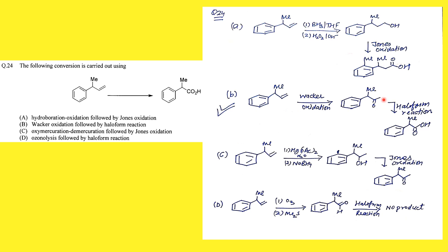The haloform reaction requires the presence of a CH3CO group — specifically an acetyl or acetoxy group. When treated with iodine in the presence of a base, it leads to formation of the corresponding acid. This is the correct sequence. Oxymercuration-demercuration: mercury adds water, water attacks inside leading to formation of a secondary hydroxy compound — which is opposite to what hydroboration oxidation gives — so this is not what we want.